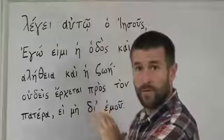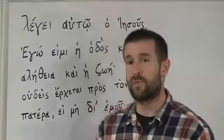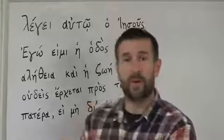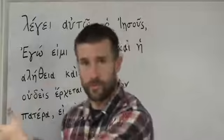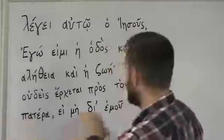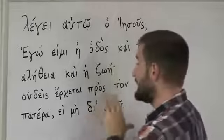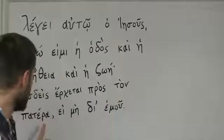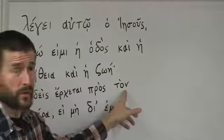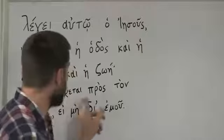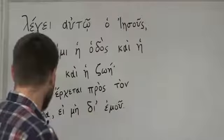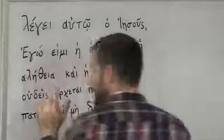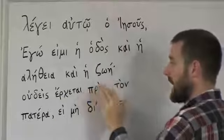Remember pros from John 1:1? In John 1:1, pros meant 'with,' but the Greek preposition pros can also mean 'to,' 'toward,' or 'unto' — as in going to something. That's how it's being used here. Even though it has a different definition here, it still takes the accusative case. So oudeis erchetai pros ton patera — 'no man cometh unto the Father.'